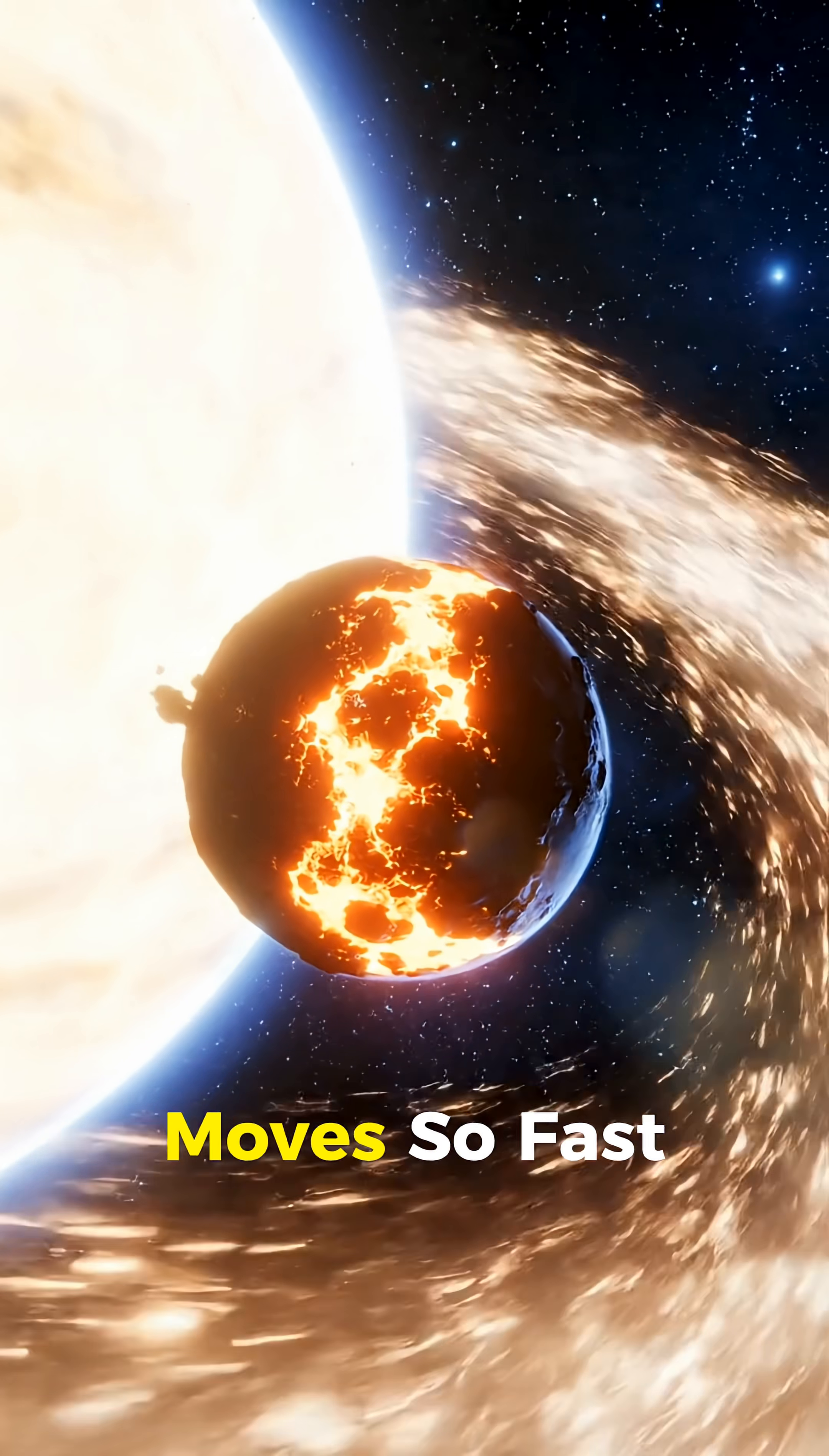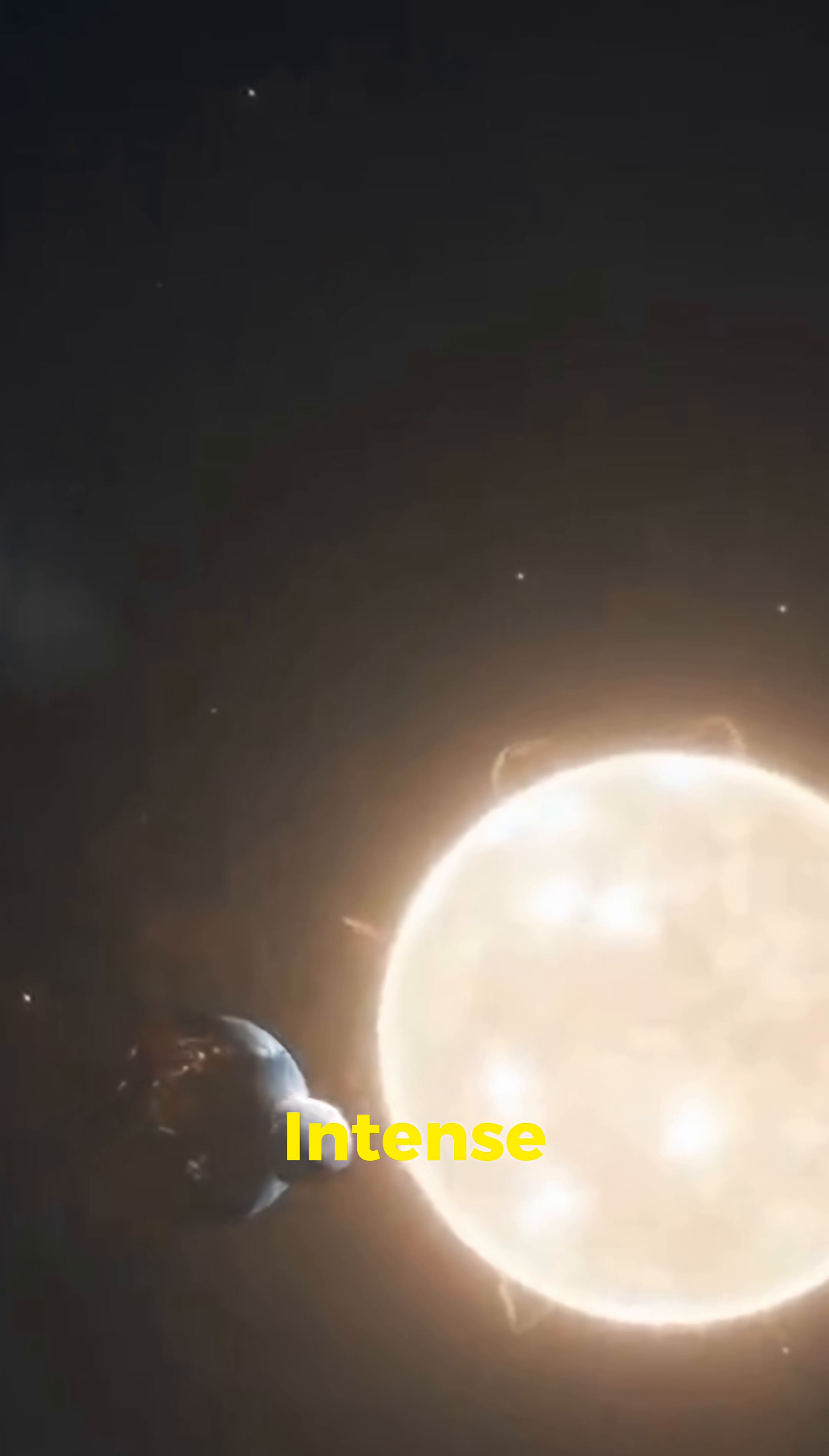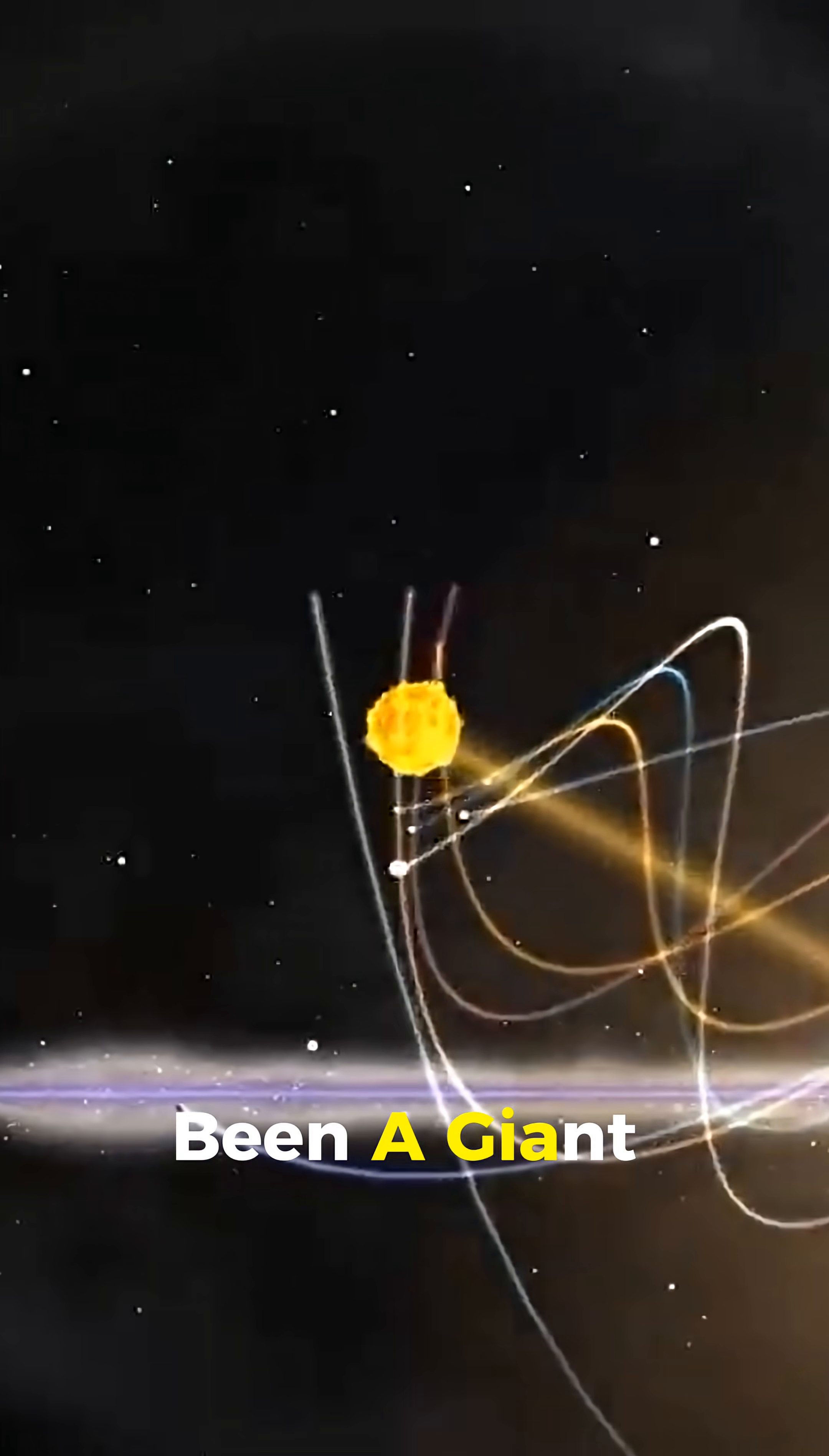This extreme planet moves so fast around its star that it almost looks like it's slingshotting through space, pulled by a star so close and intense that its surface is likely hotter than molten metal. Scientists believe it may have once been a giant world,